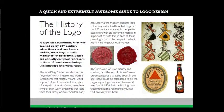The word logo is technically short for logotype, which is descended from a Greek term that roughly means 'word imprint.' One of the earliest examples of a logo is a coat of arms, a medieval symbol often worn by knights to identify their family or state. Another early precursor to the modern business logo is the wax seal.